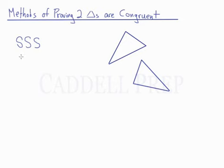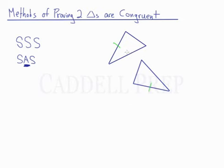The next method is side, angle, side — SAS. What's very important is that the angle is written between the two sides, because in our diagram the angle is going to be in between the two sides as well. So, for example, this side is congruent to this side, and this side is congruent to this side, and the angle between these sides is also congruent. So we have side, angle, side.